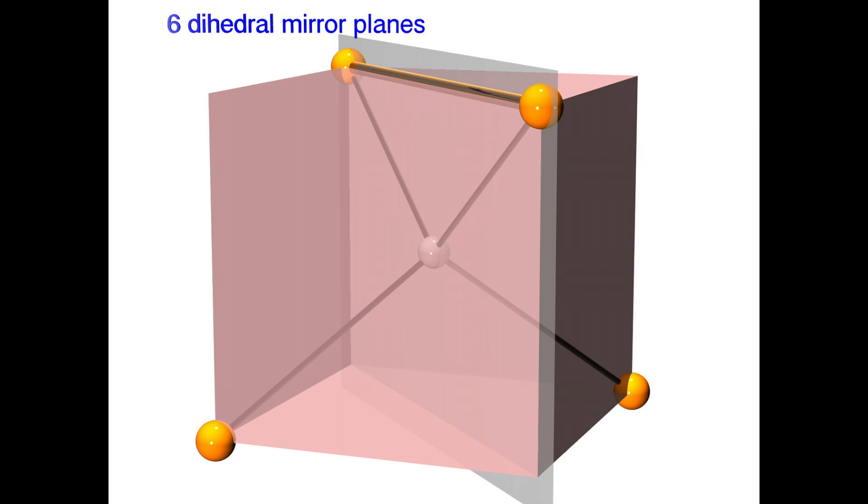To find a second dihedral mirror plane, let's connect two more atoms, the ones on the front face of the cube. This gives us the position of the edge of a second dihedral mirror plane.